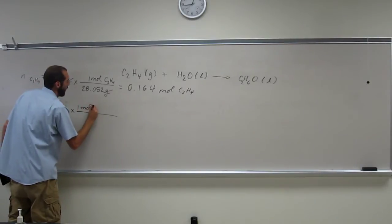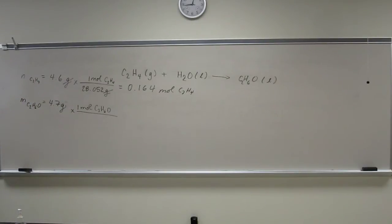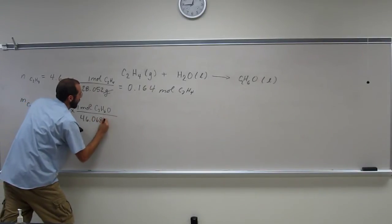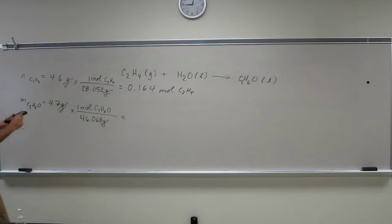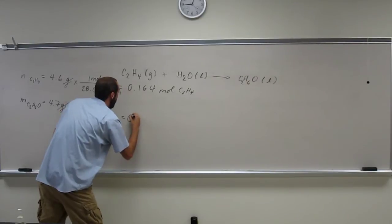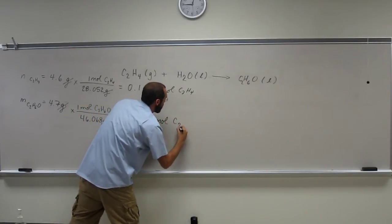And now we've got to do the same for ethanol. So we know one mole equals 46.068 grams per ethanol. The number of moles I got of ethanol, 0.102 moles of C2H6O.